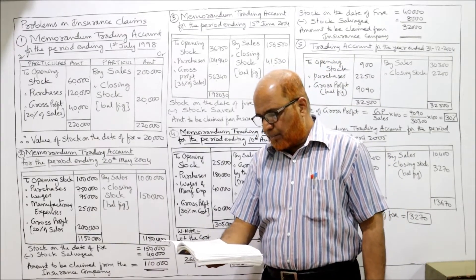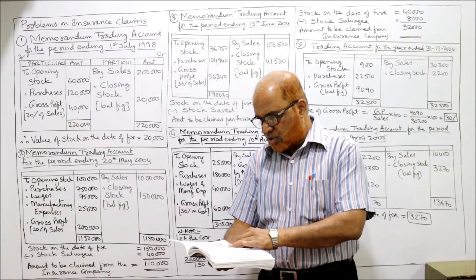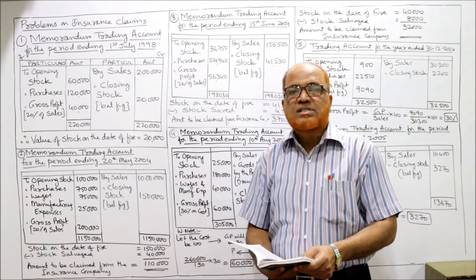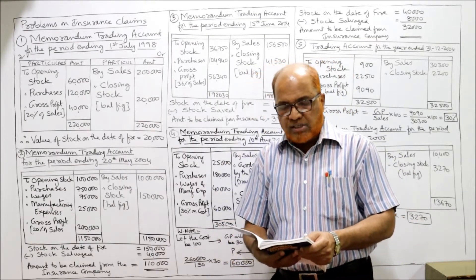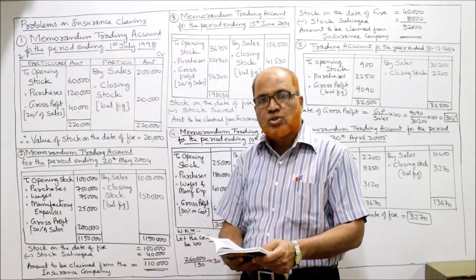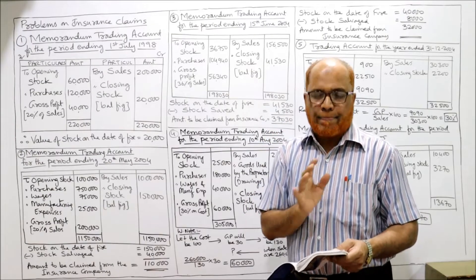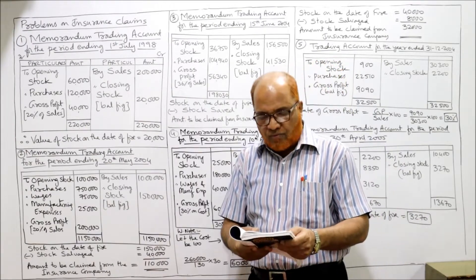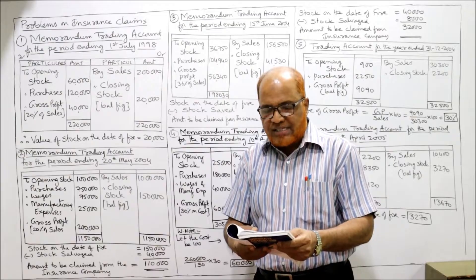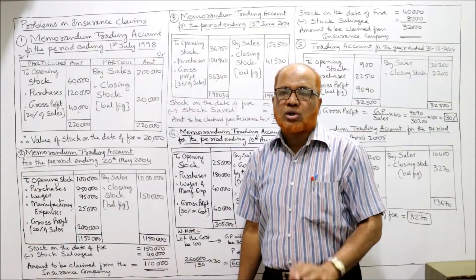Second problem: fire occurred on 20th May 2004 in a factory. Ascertain the claim to be lodged for loss of stock on the date of fire. Opening stock on 1st January 2004; purchases from 1st January 2004 to date of fire: 7,50,000; wages: 75,000; manufacturing expenses: 25,000 (both direct expenses, debited to trading account); sales from 1st January to date of fire: 10 lakh; gross profit ratio: 20% of sales.